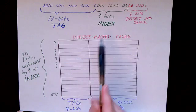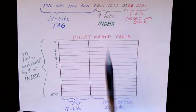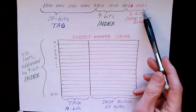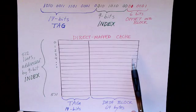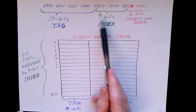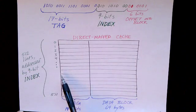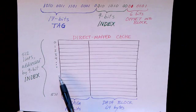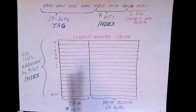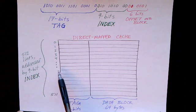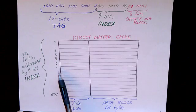And so when the cache is presented with a 32-bit address, what does it do? It pulls off the 6 bits for the block offset, and then it extracts the 9 bits here and uses those as an index into a normal sort of memory. So this is a normal sort of memory where every line has its own address. And these sorts of memories are fast.